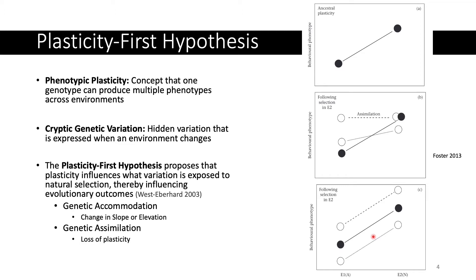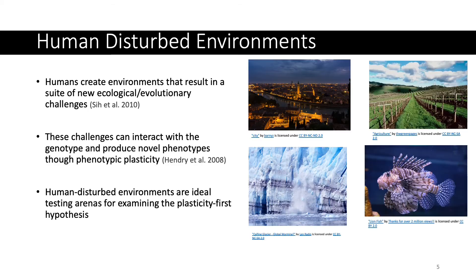So the degree or slope of the line is the same, but the elevation is different in both cases. You can also get genetic assimilation, which is a loss of plasticity altogether, which Susan depicted in figure B. The reason these concepts are so important is because humans are disrupting and damaging our environment in such a way that we're bringing new suites of ecological and evolutionary challenges to the populations experiencing our disruptions.